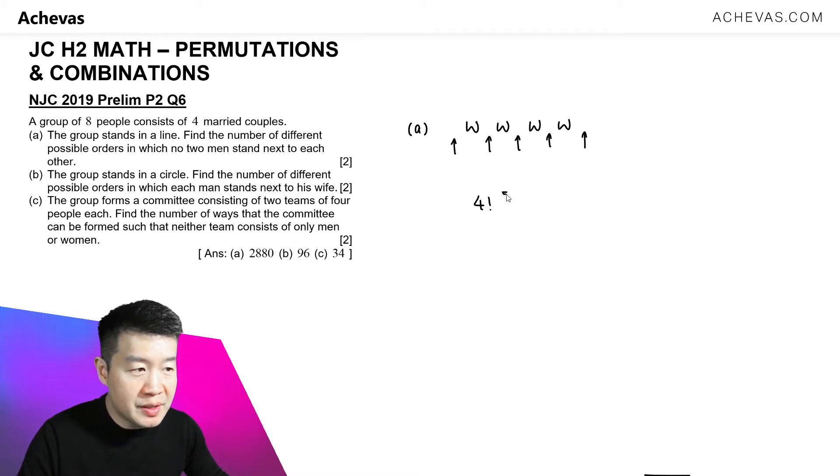So for these five possible spaces, we will choose four for the four men. Because once the four men occupy any of the five spaces here, they will always be separated from each other. And for these four spaces, we will arrange the four men. So multiply by four factorial and this should give us our answer 2880.